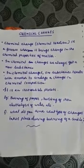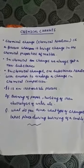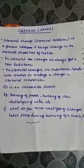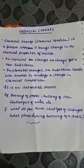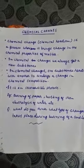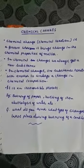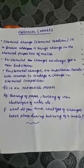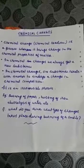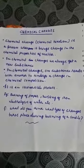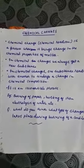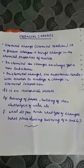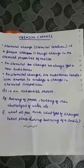In chemical changes we always get a new substance. One substance reacts with another to undergo a change in chemical composition, and it is an irreversible process — we cannot reverse it. For example, burning of paper.